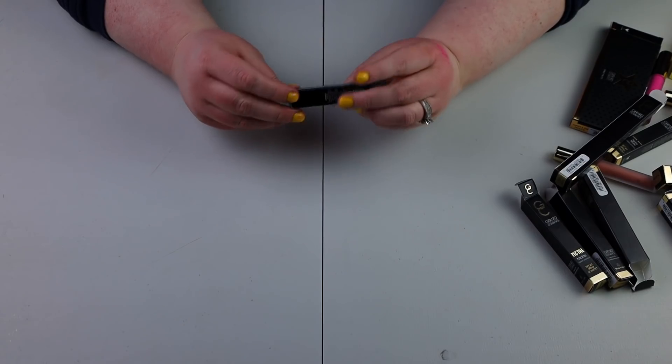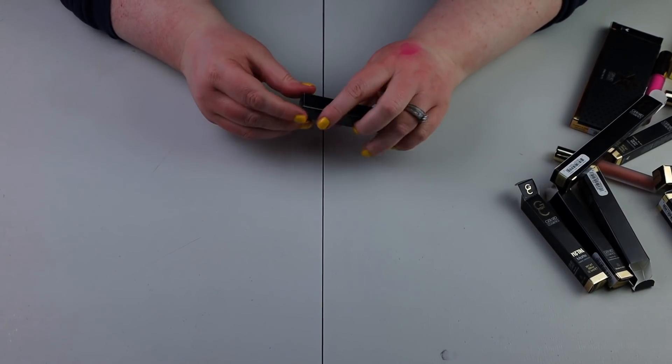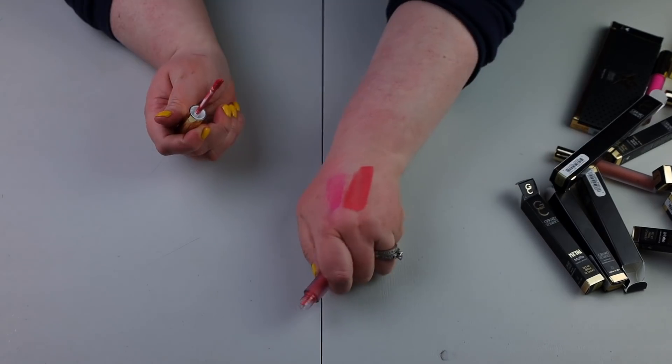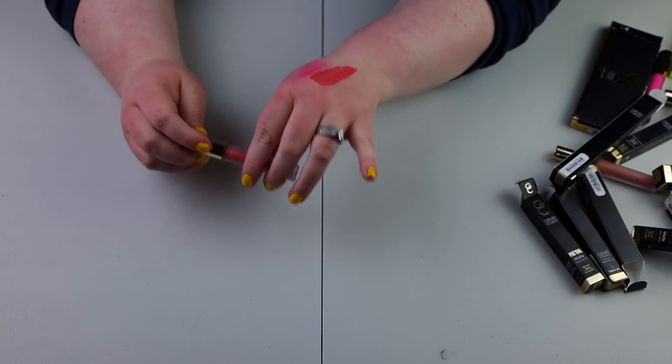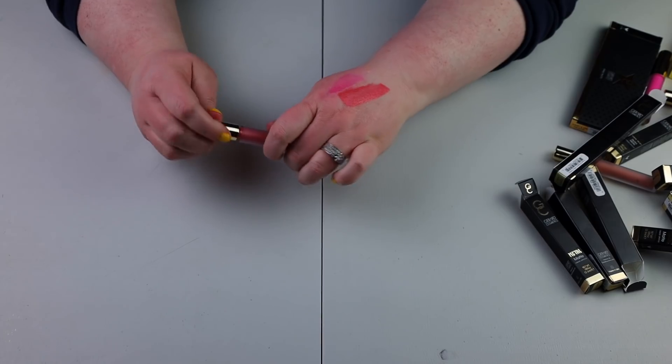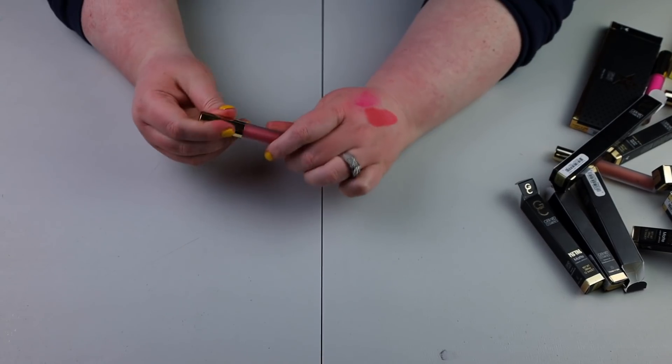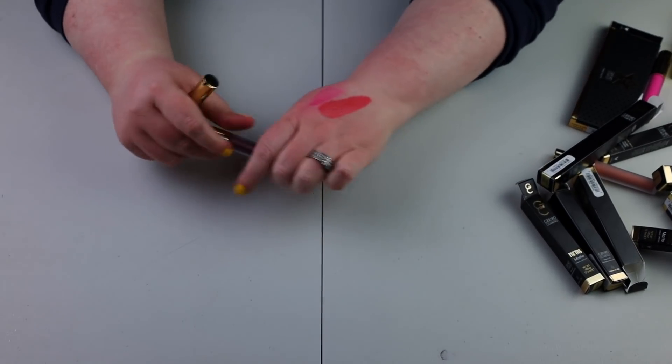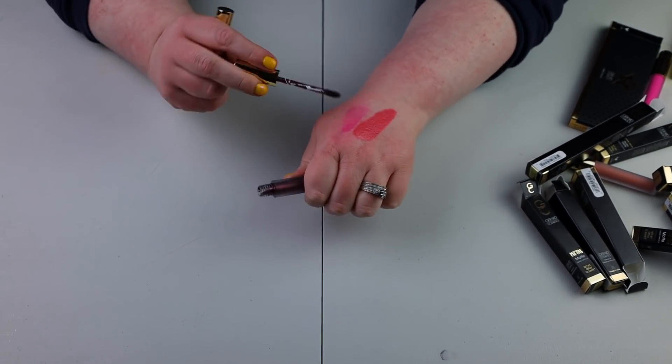And last but not least, we have another metal matte liquid lipstick, and this is in the shade fuzzy navel. Oh, that's pretty. Oh, I love that. I love that shade. That's a very pretty shade. And it actually has metallic sheen to it. I would think the purple shade was actually a little bit more noticeable. So the shade underworld, I feel like had more of a sheen.